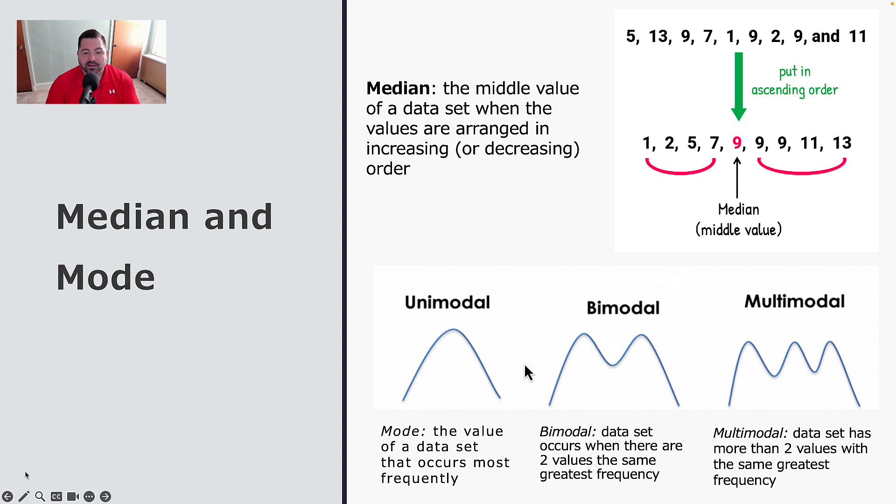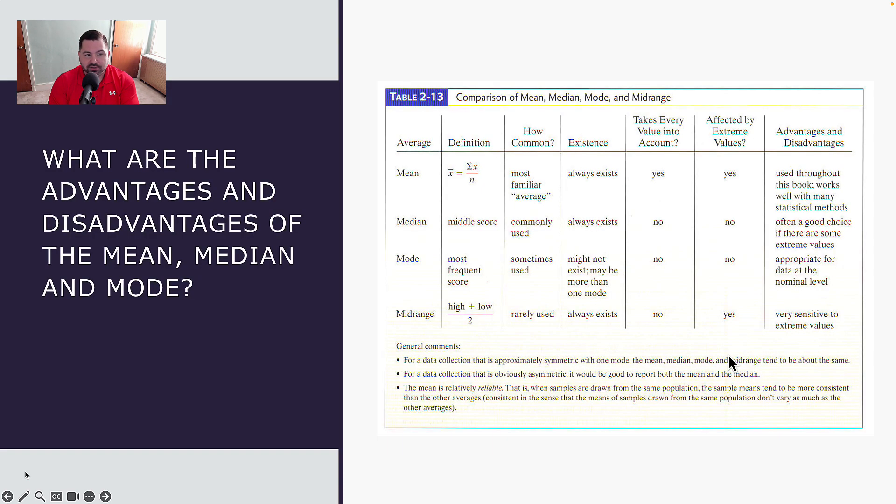But graphically, it's completely possible to have a unimodal distribution where there's one mode that occurs the most frequently. There's something called a bimodal distribution, where if you have two numbers in a data set that have a tie effectively in the highest frequency, we would call that a bimodal distribution. Or if there was two or more modes with the highest frequency, we would call that a multimodal distribution.